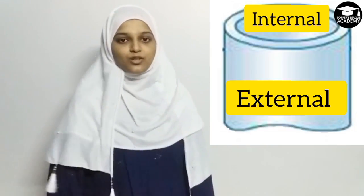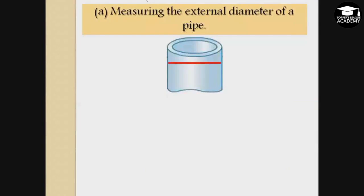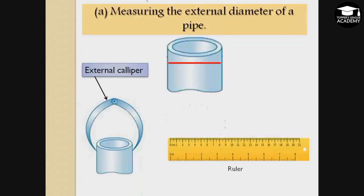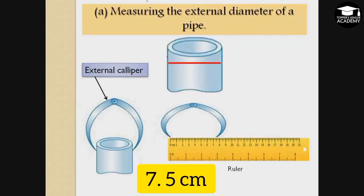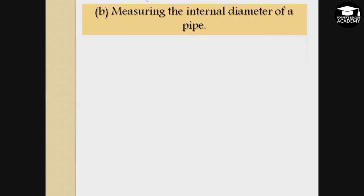To measure the external diameter of a cylindrical pipe, an external caliper is used. The external caliper is placed around the object and then placed on a ruler to record the measurement. Here the external diameter of the pipe is 7.5 centimeters.